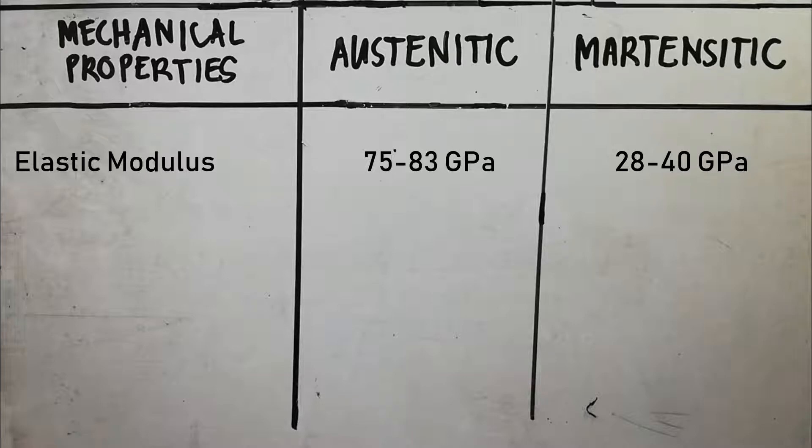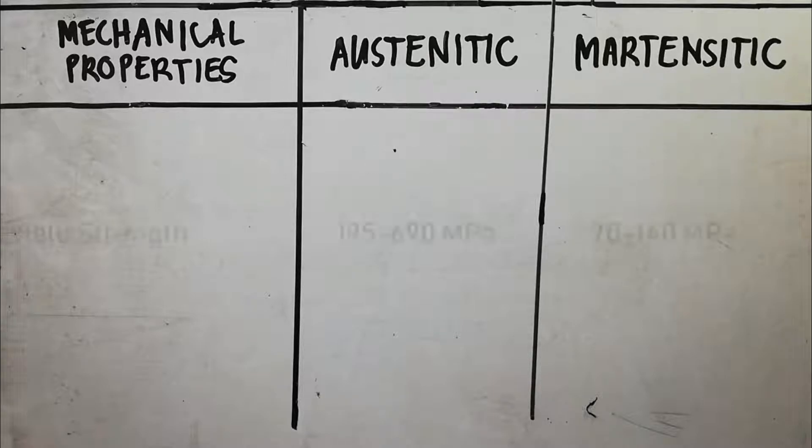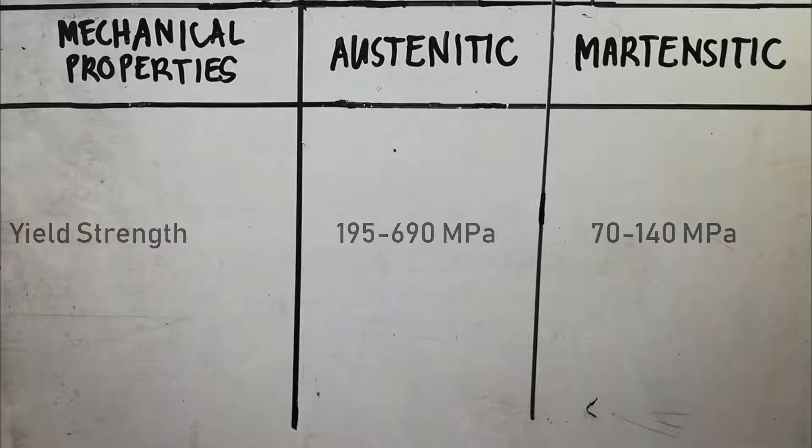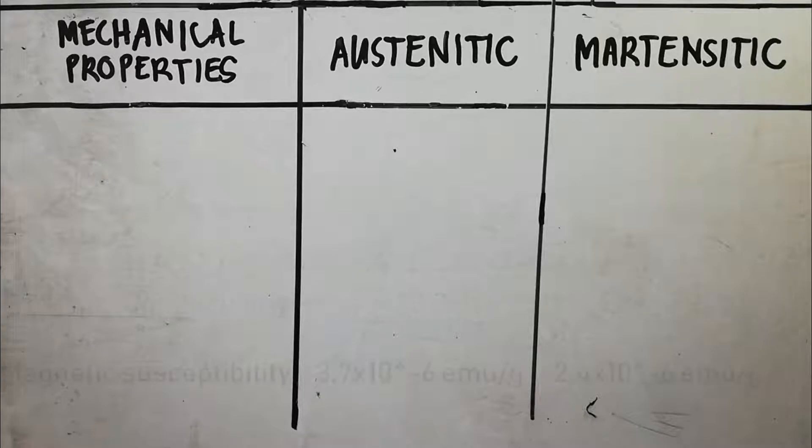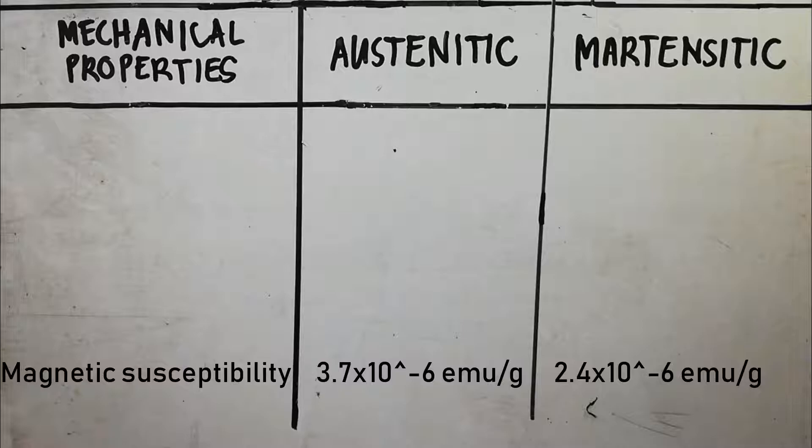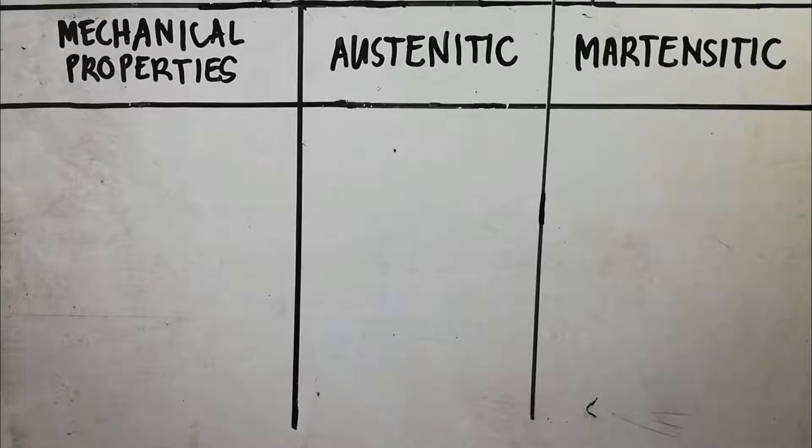My classmates eventually stopped bullying me and started to accept me. They have discovered my mechanical properties. They found out that I can be austenitic and martensitic, depending on the temperature. I have been an advocate in helping other metal kids in being accepted for who they are, even if their abilities may not have been discovered yet.